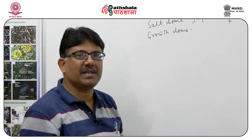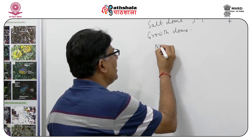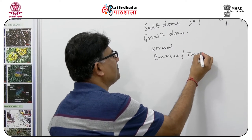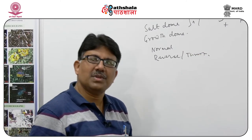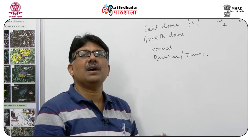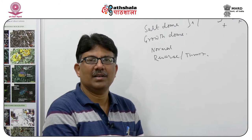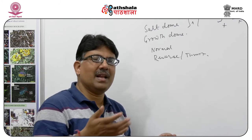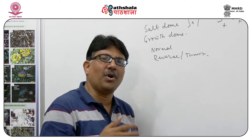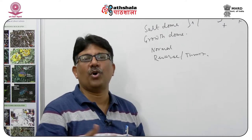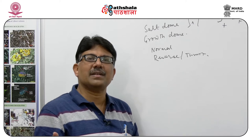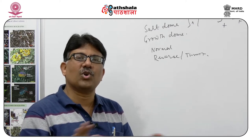Coming on to fault-related traps, we can have normal fault related traps, reverse fault related traps, or thrust-related traps. These traps basically form in both the hanging wall as well as the footwall, depending on how the fault is acting as a seal. The fault is a very ambiguous thing — it can either act as a seal or as a passage for seepage. It all depends on the nature of the fault gouge and the fault breccia product, which may cause a sealing effect.